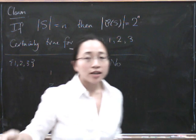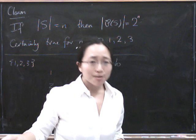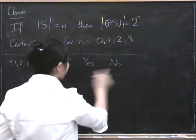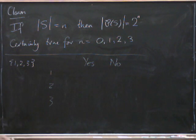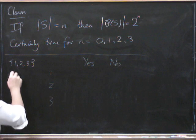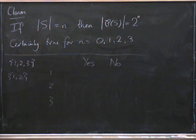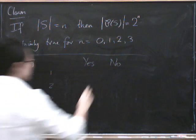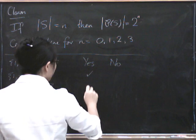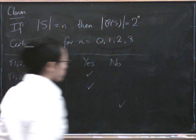So to specify a subset, what you have to do is pick yes or no for each one of these elements. For example, if we were going to take the subset {1, 2}, what we would have done was we would have said yes to 1, yes to 2 and no to 3.